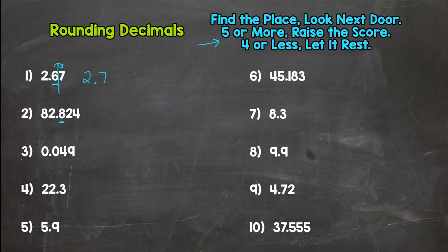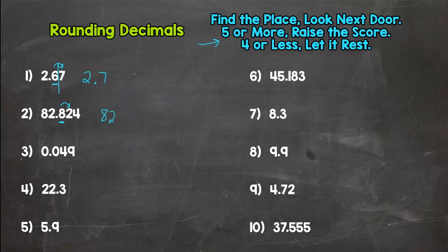For number two, we're rounding to the tenths place. We have an eight in the tenths place. Let's look next door — does that two say round up or stay the same? Is this number closer to eighty-two and eight tenths or eighty-two and nine tenths? That two says let it rest, so it rounds to eighty-two and eight tenths. As in number one, we cut it off at the rounded place.